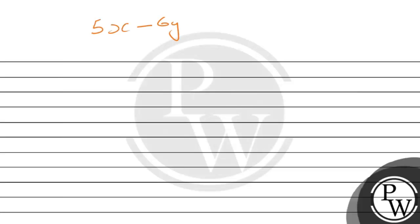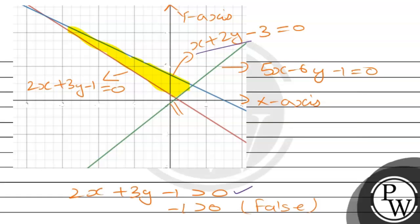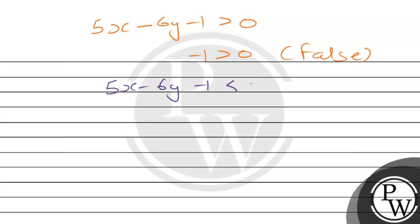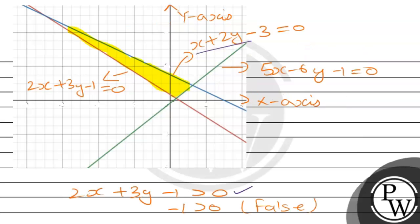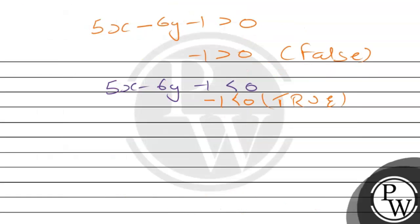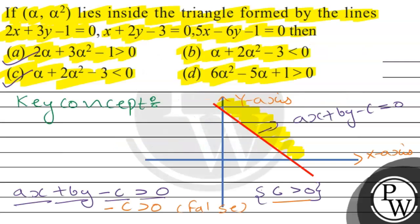For the third line, 5x minus 6y minus 1: we first check greater than 0, then we check 5x minus 6y minus 1 less than 0. Putting x and y as 0 gives minus 1 less than 0, which is true — so the region is towards the origin. For the point alpha comma alpha square, this gives 5 alpha minus 6 alpha square minus 1 less than 0. This means option D would be correct... but the final answer is that options A and C are the correct options.